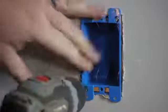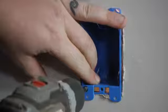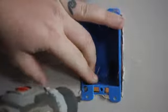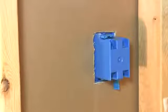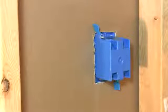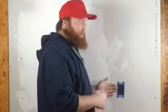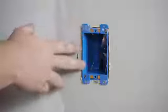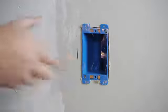Then we're going to take our drill and tighten up these screws. Now you have a flush mounted box to your drywall that any cover plate will cover.